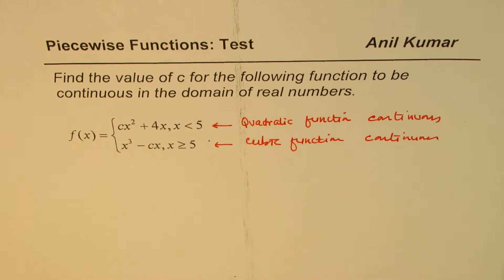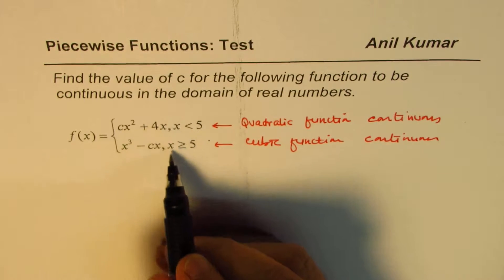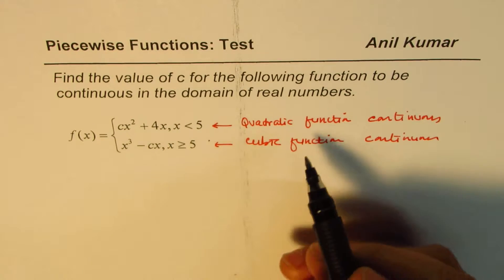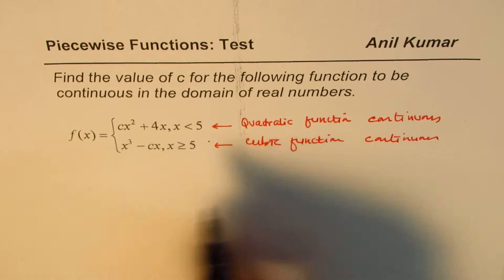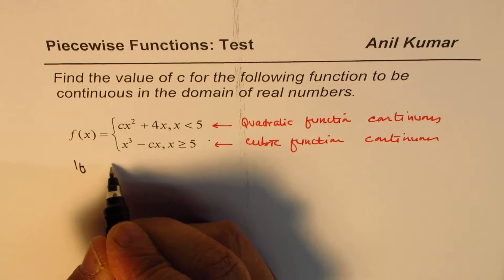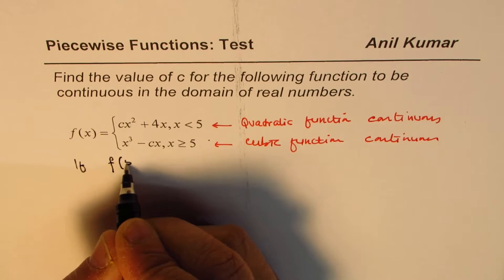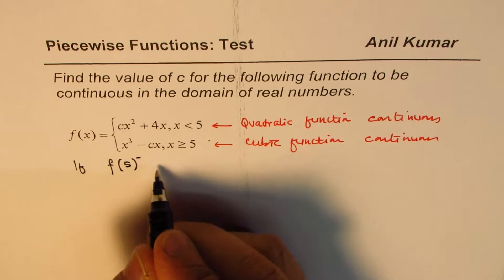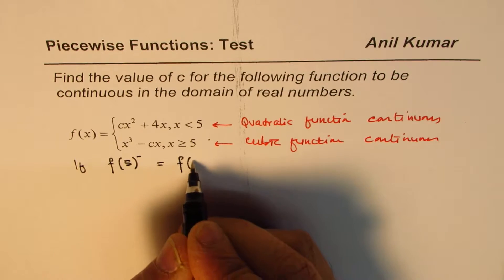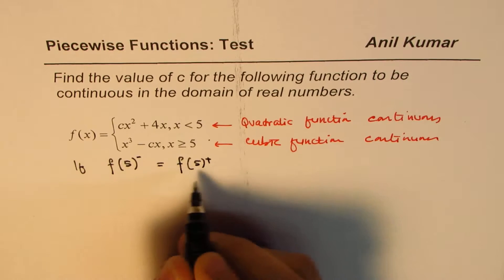At 5, there is a break. We are switching from one function to another. So the concept is if f of 5, I should say from the negative side, is equal to the value of the function at 5 from the positive side,